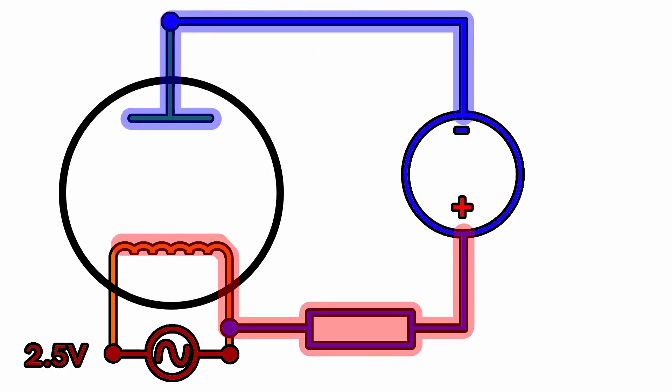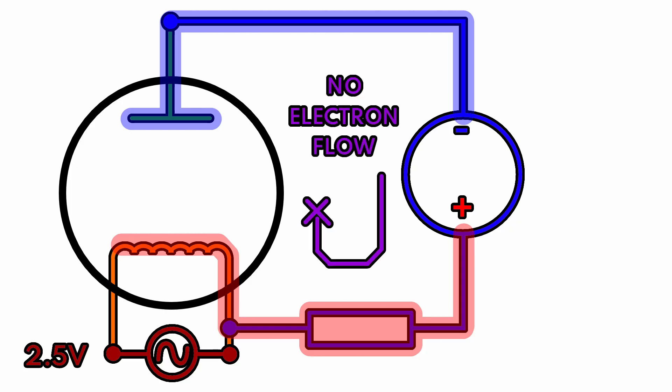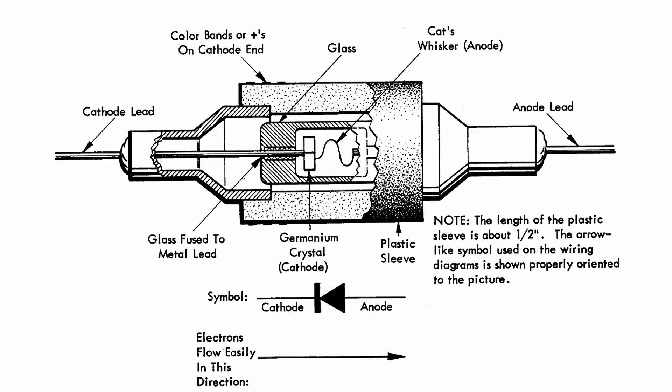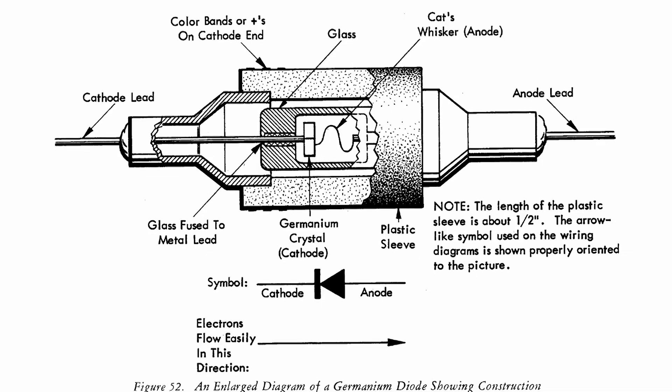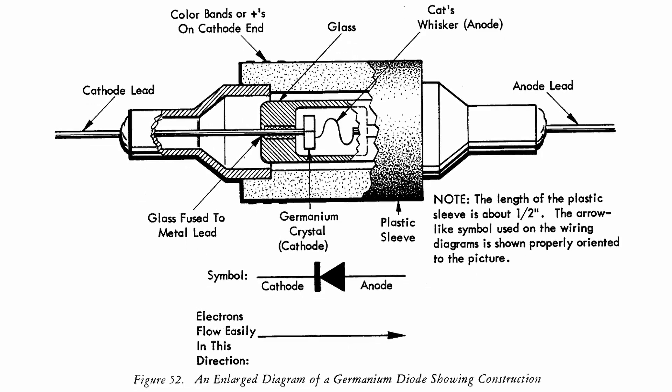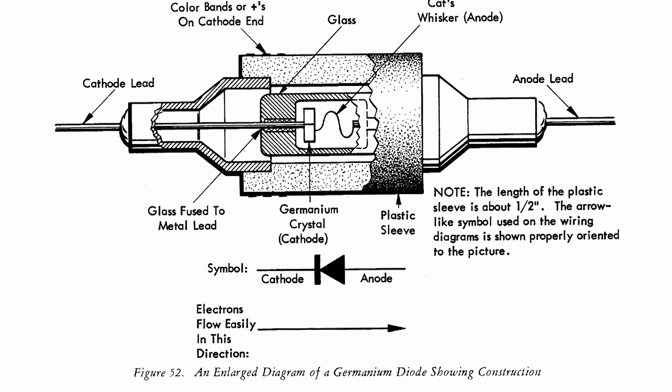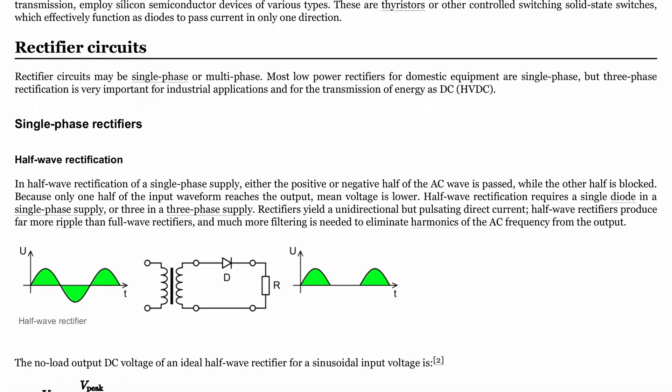Now if we flip that around and we put the strong positive voltage on the cathode and the negative voltage on the anode, well there's no heat on the anode so the electrons can't boil off, and so current doesn't flow through the tube. And this is exactly how a diode works. You have electrons flowing from cathode to anode but no electrons flowing from anode to cathode. It's just a one-way street.